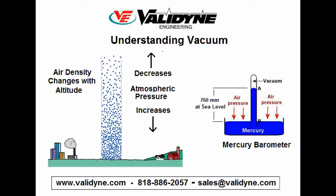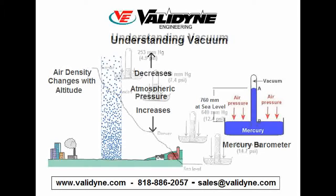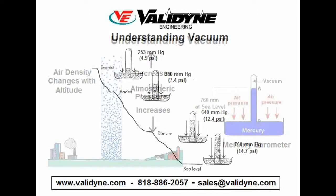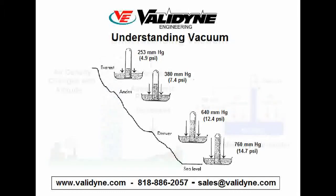He also observed that changes in the weather caused a slight change in the height of the mercury column. Torricelli then carried his barometer on hikes up into the Alps, and he observed that the column of mercury was shortened with altitude. From this, he deduced that the atmospheric pressure varied with altitude. More precise measurements of atmospheric pressure and altitude were carried out over the centuries, and you can see in this screen how elevation affects the pressure of the atmosphere.